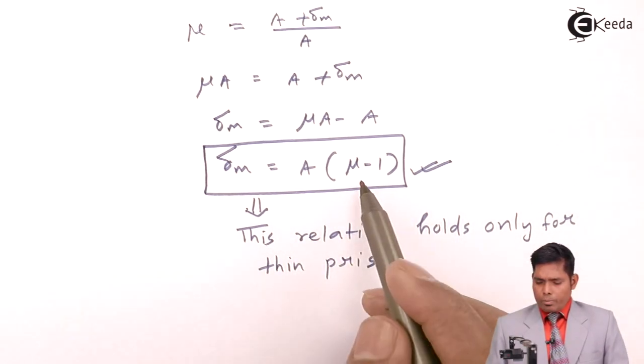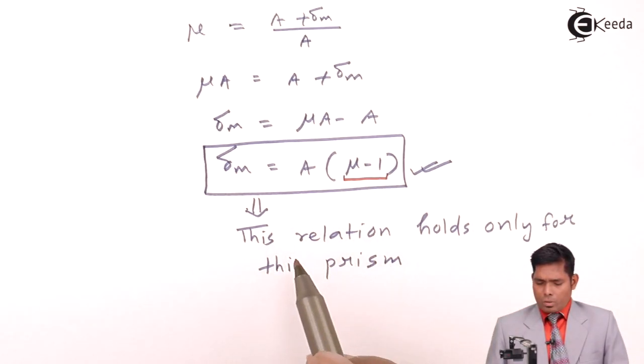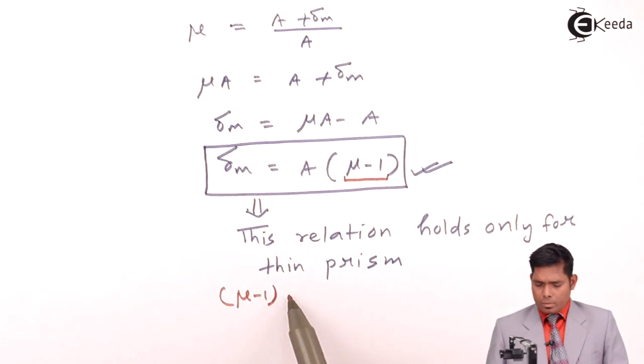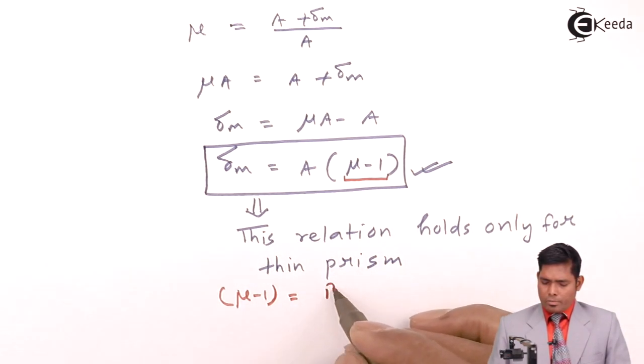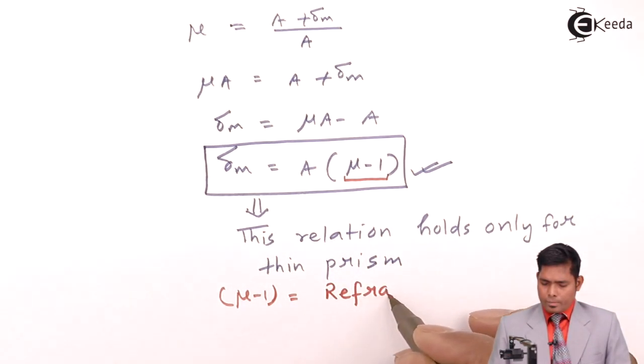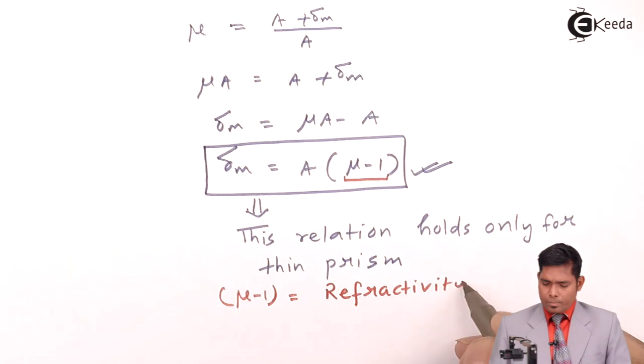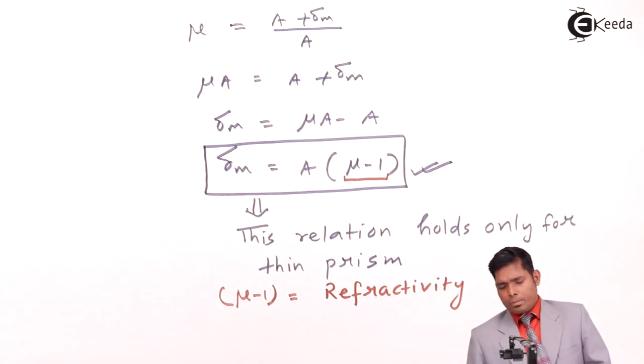Now this quantity (mu minus 1) is called the refractivity of the material of prism. This is called the refractivity of the material of the prism. It is dimensionless.